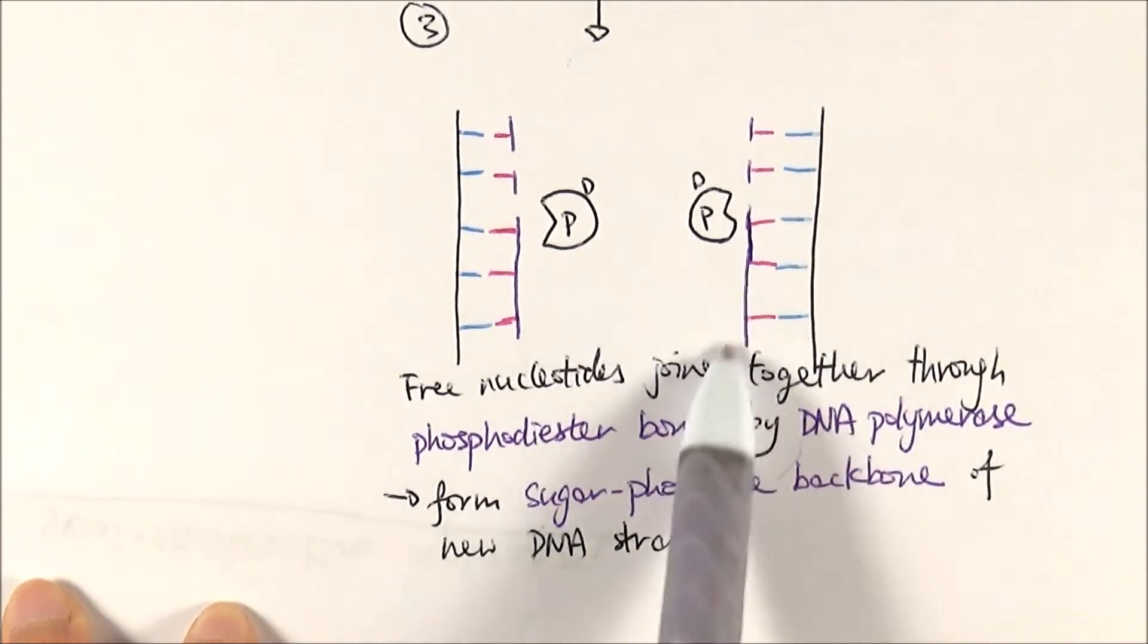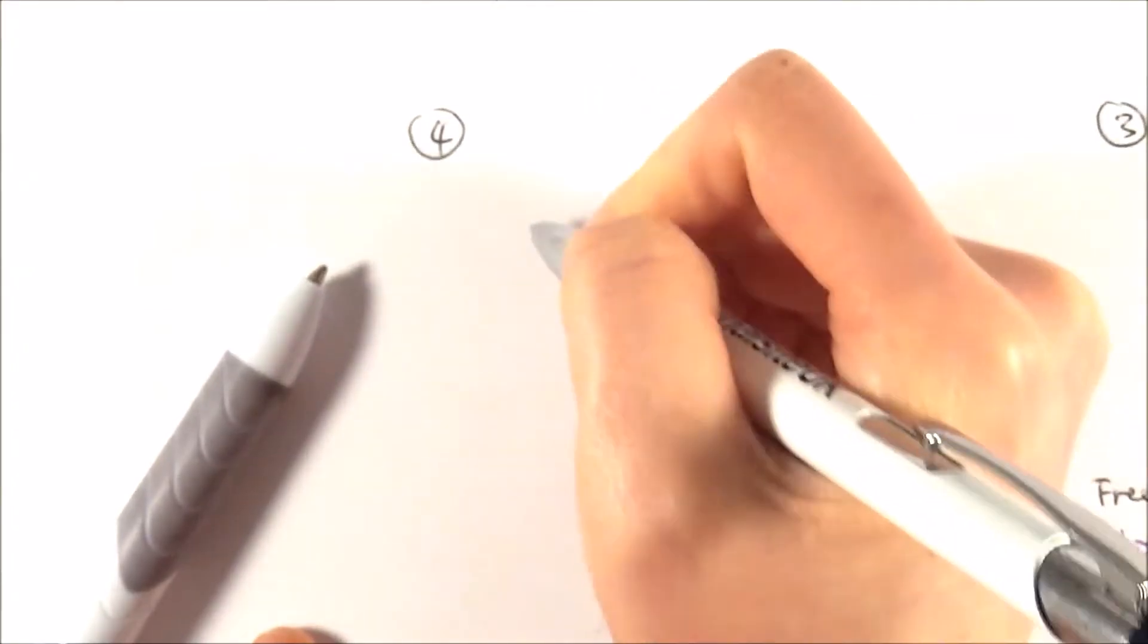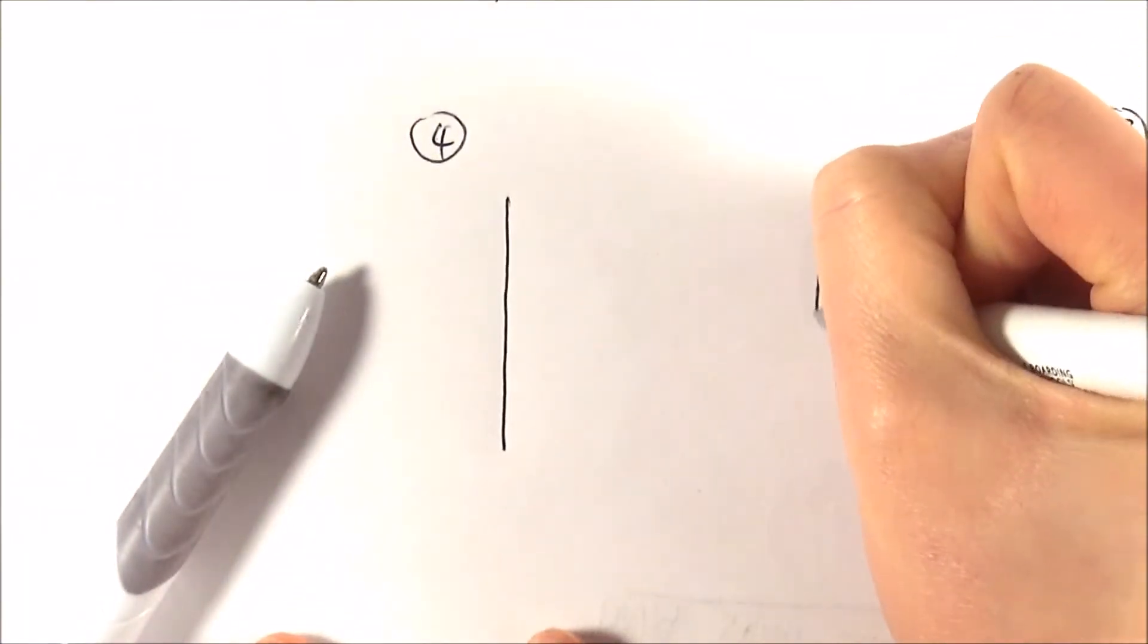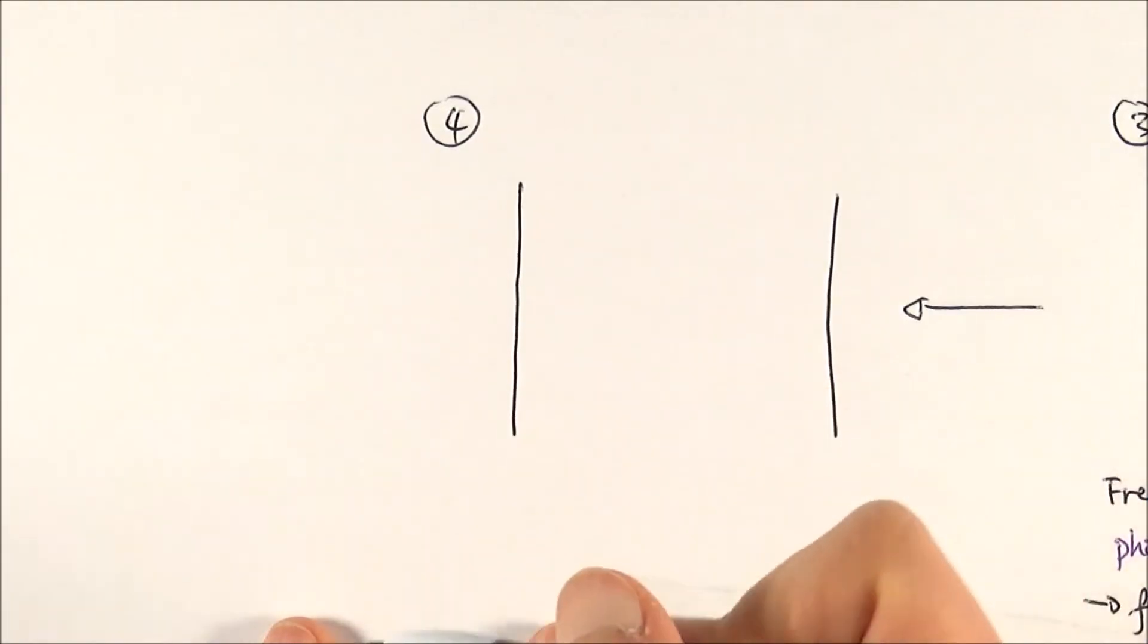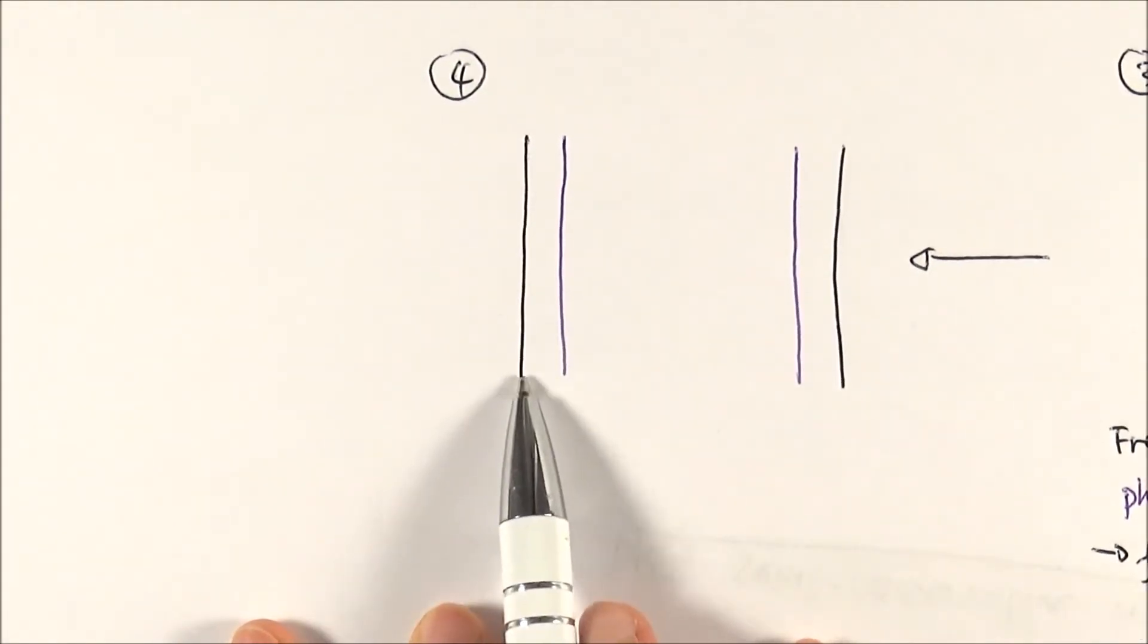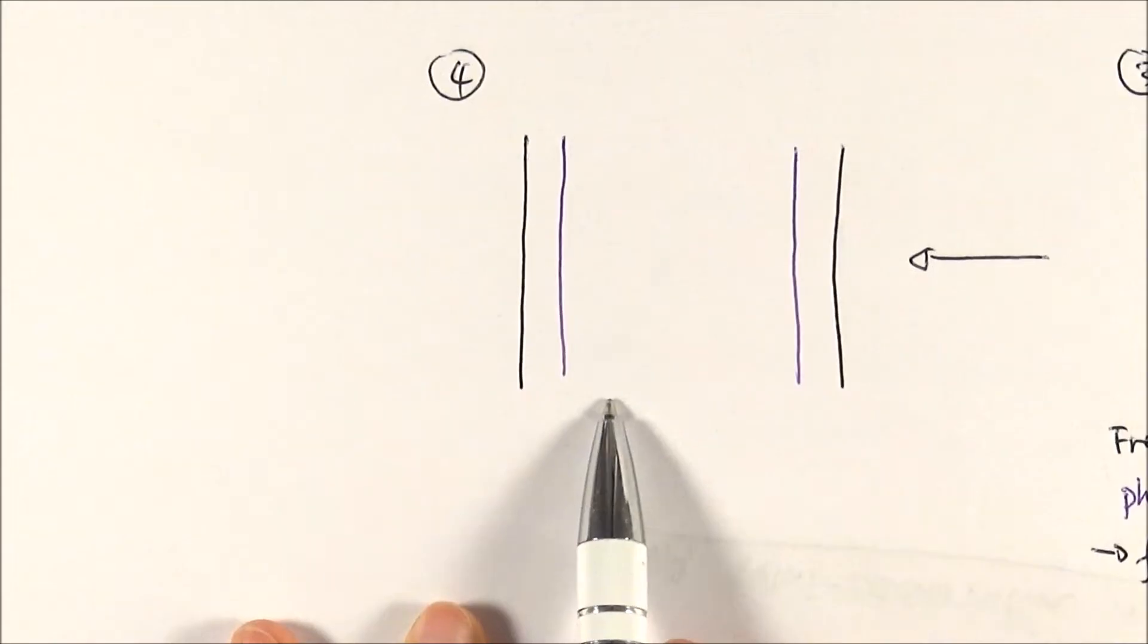This is called semi-conservative replication because each DNA molecule contains one old and one new strand.